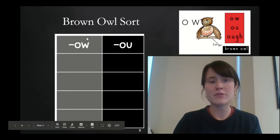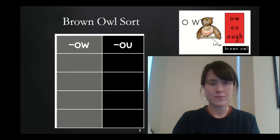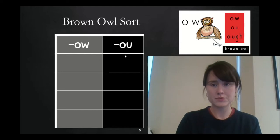Great. At the top of your first column, write O-W. And at the top of your second column, write O-U. So, we'll be building words that have O-W says ow or O-U says ow. Now remember, if you build it and it doesn't look right, you can always try it with a different spelling pattern. Are you guys ready for our first word? Great. I knew you were.